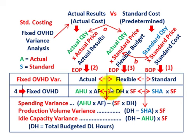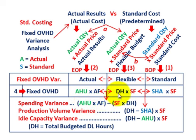Our spending variance — there's no common term between our flexible and actual amounts, so we're just looking at the difference. We take our actual results — actual hours used times our actual fixed overhead rate — and compare it to the flexible amount, which is the standard fixed rate times total direct labor denominator hours. That difference is our spending variance.